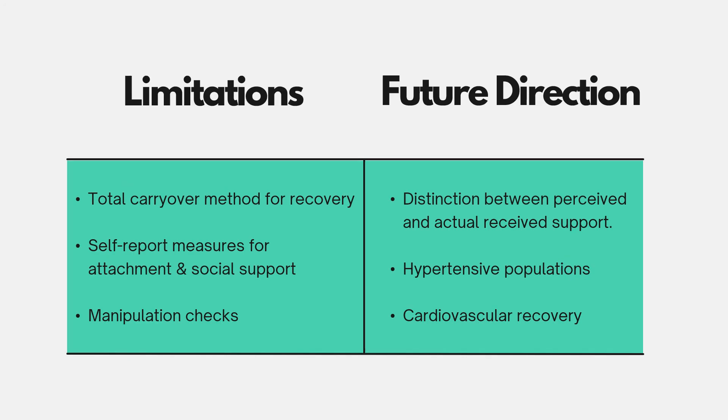Regarding limitations: first, the total carryover method for recovery is not the most reliable approach — the area under the curve method is more reliable and accurate, but was beyond the scope of this study. Second, the use of self-report measures for attachment and social support may affect accuracy, as both constructs contain further subcategories not assessed here, such as affectionate support. Lastly, manipulation checks are valued by prestigious journals; however, the typical manipulation check is a verbal rather than behavioural measure, which may undermine accuracy as participants' perceptions are not always in line with actual measures.